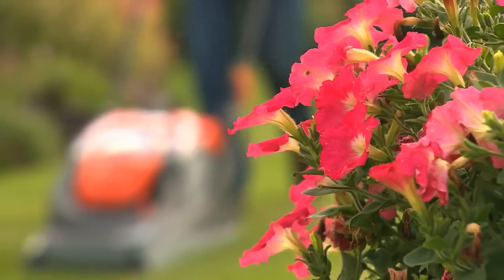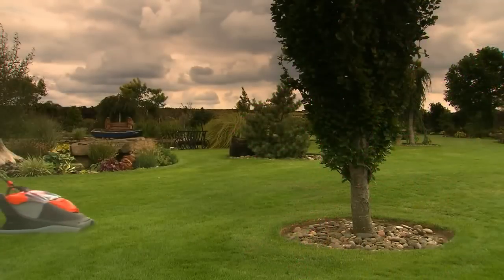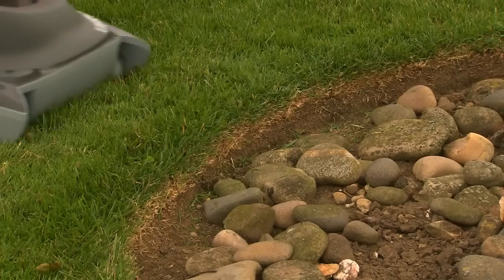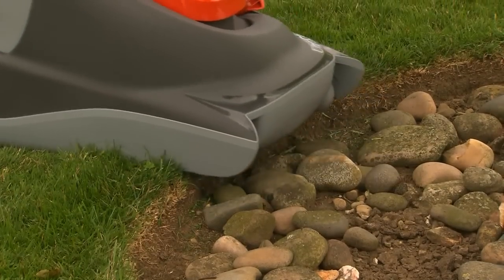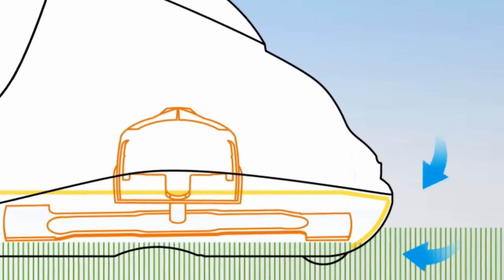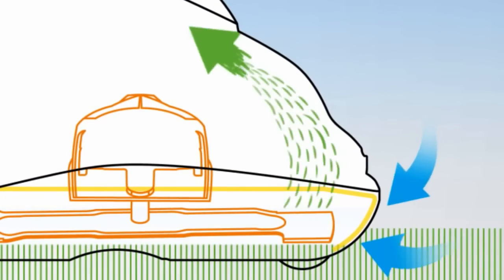Where other mowers would have struggled, the Flymo UltraGlide excels, giving a closer cut and a tidier result by lifting the grass with a powerful vacuum before cutting for a super clean finish.